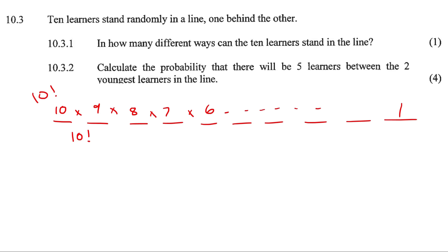10 factorial is 3,628,800. Now calculate the probability that there will be five learners between the two youngest learners in the line.